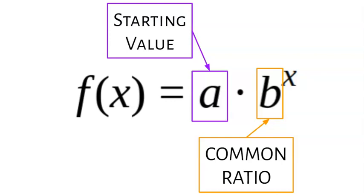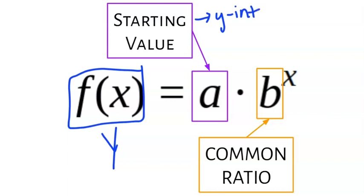First off, the exponential equation format is f(x), which could also just be replaced with y, y equals or f(x) equals a, which is our starting value, or also known as our y-intercept, is always going to be that number for y when x is 0.